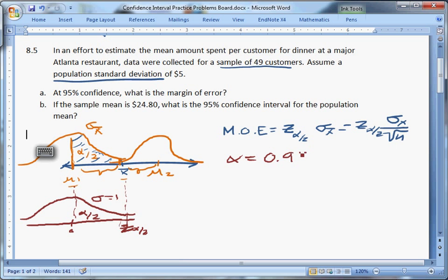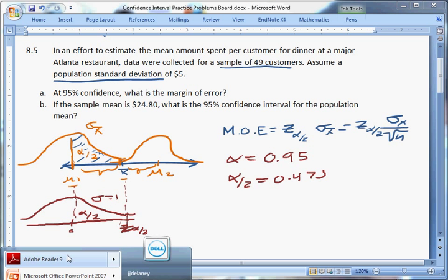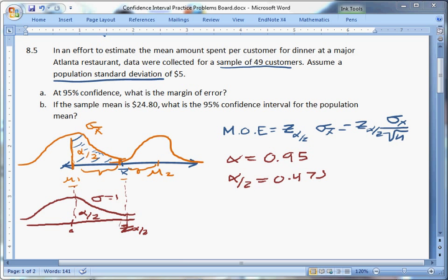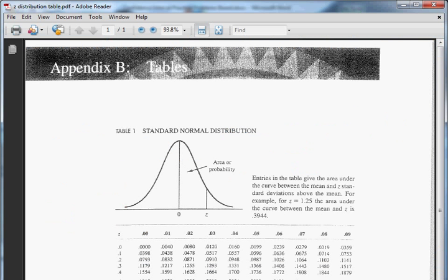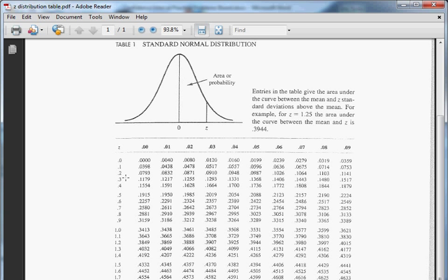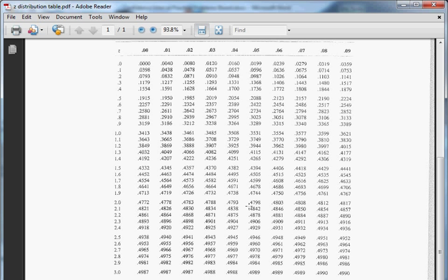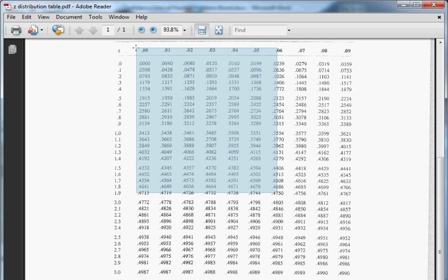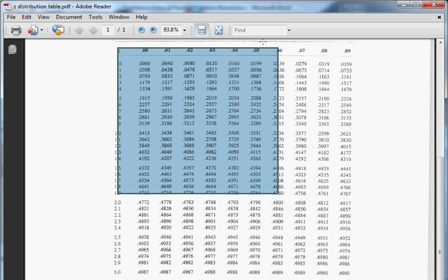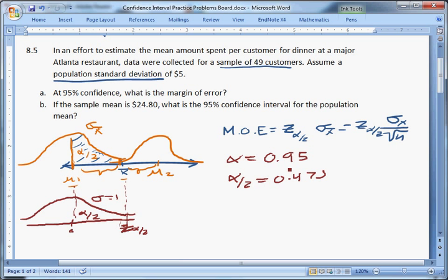The formula is pretty straightforward. The margin of error is going to be equal to Z sub alpha over 2 times sigma X bar, which is equal to Z sub alpha over 2 times sigma X over the square root of N. Alpha is equal to 0.95. So alpha over 2 is equal to 0.475. I'm going to pull up my Adobe Acrobat and get my Z table up. What we want to know is the Z value for which the distance between 0 and Z is 0.475. We're looking in the body of the table for 0.475 for alpha over 2. It should be right here. You can see we have it exactly. It's going to be 1.96. So you get the 1.9 over here, 0.06 over here. So 1.96 is our value of Z.